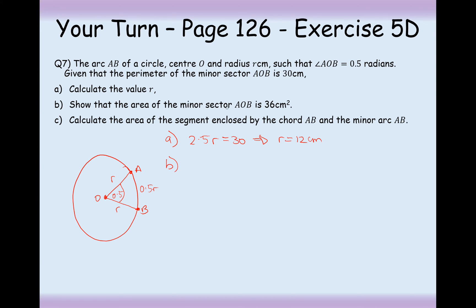Part B: show that the area of the minor sector is 36. Using the formula half R squared theta, that's half of 144 times 0.5, which is 144 divided by 4. Using a calculator, divide by 4 and you get 36.